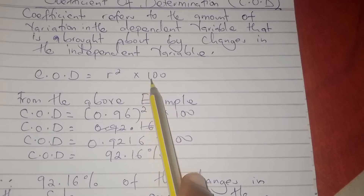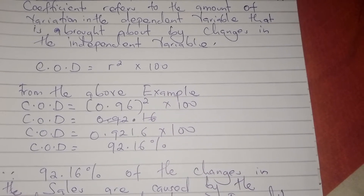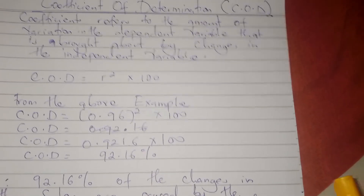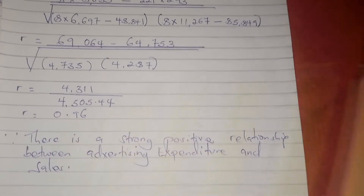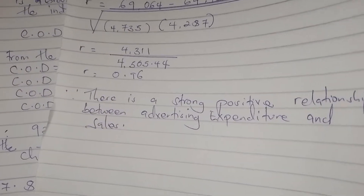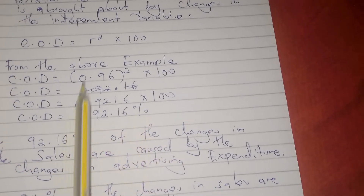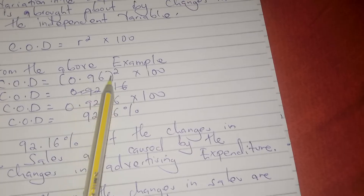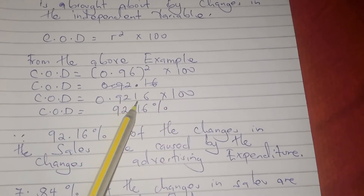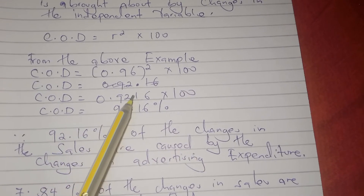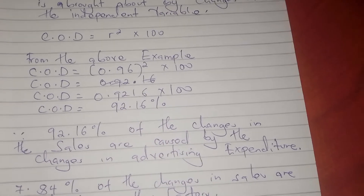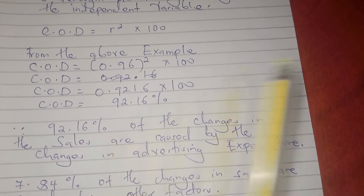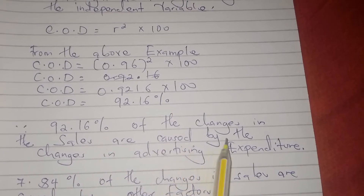The formula is R squared times 100. We are going to use the previous example used to calculate correlation using Pearson's method, where our R is 0.96. So the coefficient of determination is 0.96 squared times 100, which gives 0.9216 times 100, equaling 92.16. This means that 92.16% of changes in sales are caused by changes in advertising expenditure.